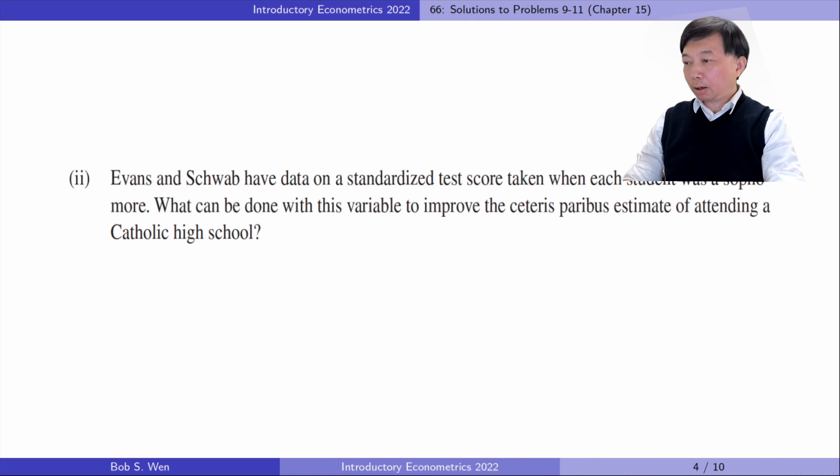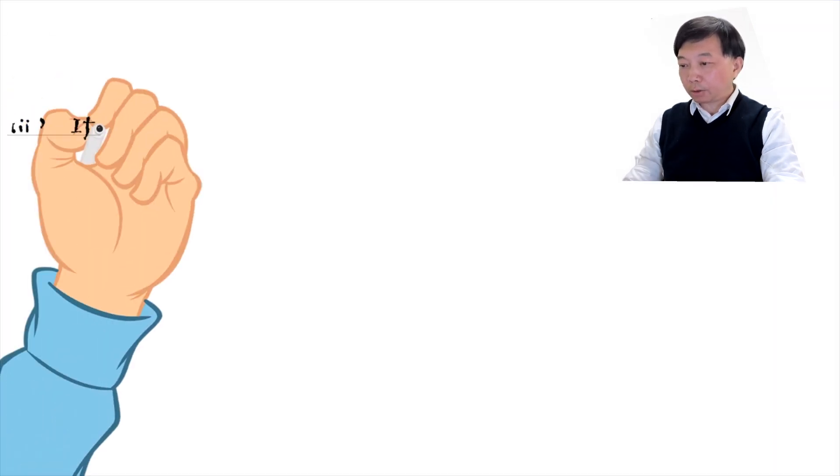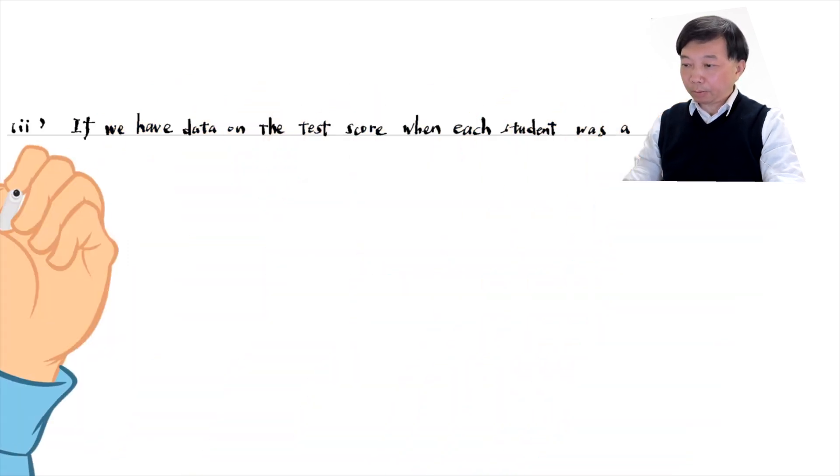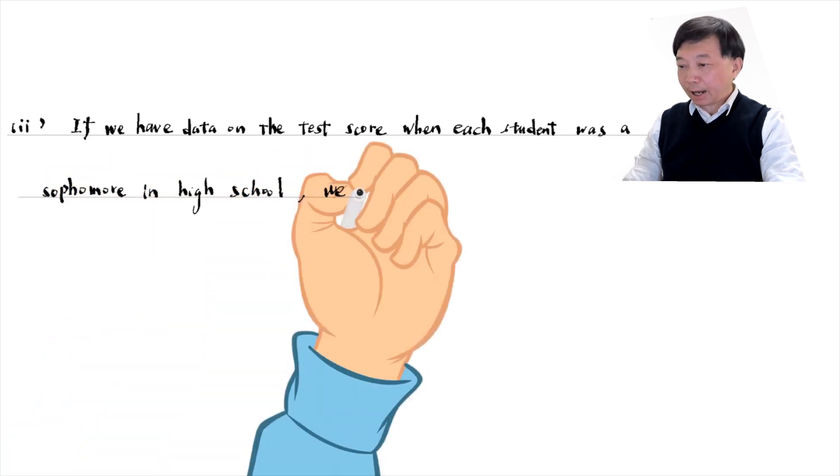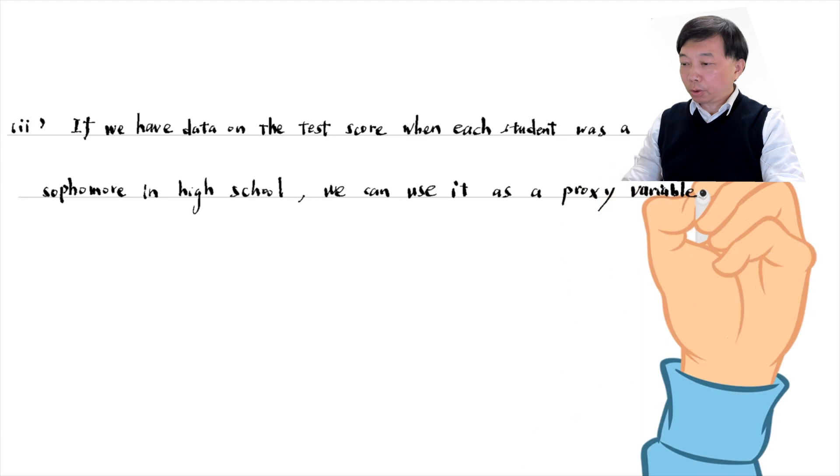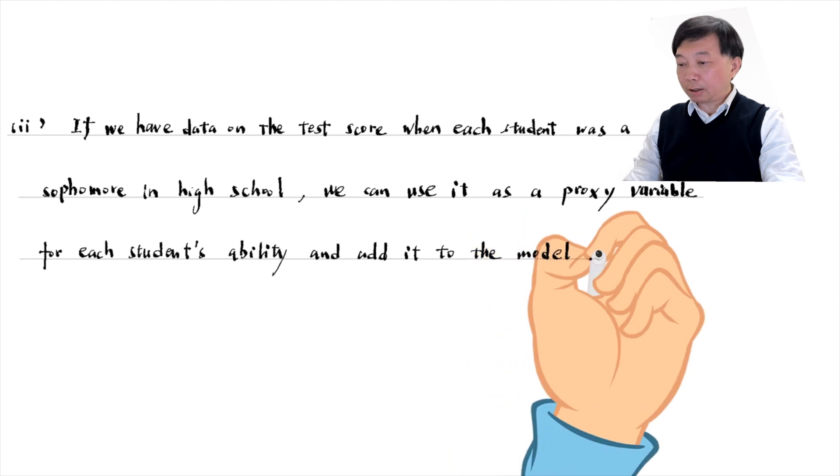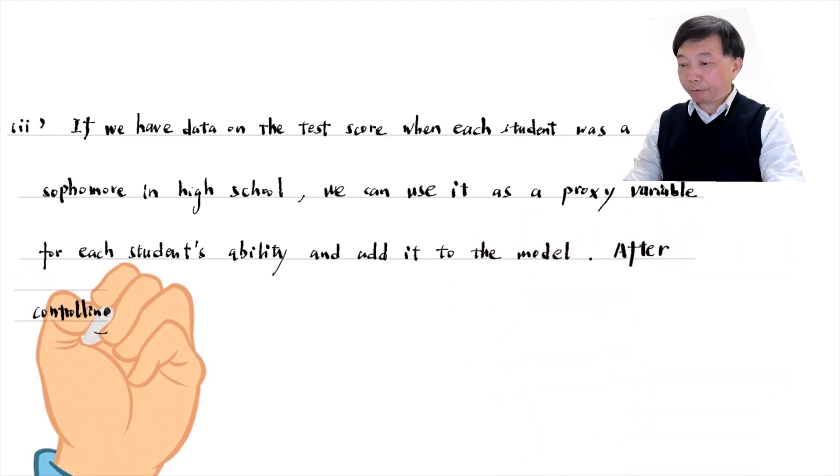In part 2, suppose we have data on a standardized test score taken when each student was a sophomore in high school. We can use it as a proxy variable for each student's ability and add it to the model. After controlling for students' ability, we are more likely to obtain the causal effect of attending a Catholic high school on the probability of attending college.